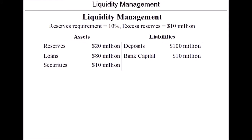Let's look at some more details of liquidity management through a couple of examples showing the importance of having enough reserves. Consider a bank facing a reserve requirement of 10%, meaning reserves on the asset side must be at least 10% of deposits on the liability side. This bank has 20 million in reserves and 100 million in deposits, so the minimum required reserves are 10 million.